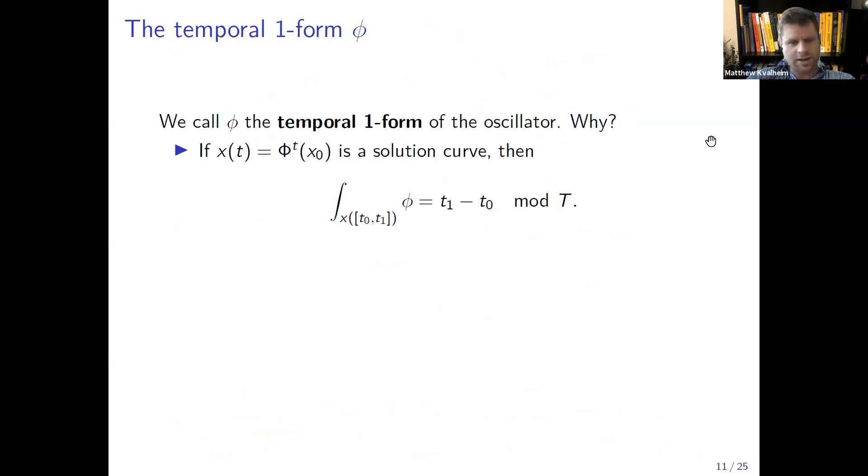Because if you take the line integral of d of anything along a closed loop you have to get zero, this is the same as saying if you integrate a gradient vector field along a closed loop you get zero. But when you integrate φ over the limit cycle, because of this property that φ tilde and hence φ of f is identically equal to one, you just get the period of the limit cycle which is not zero, so φ cannot be the gradient of anything. Now we call φ the temporal one form of the oscillator.